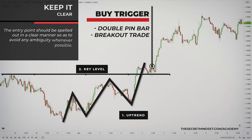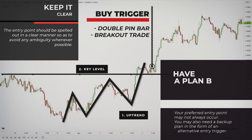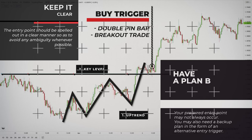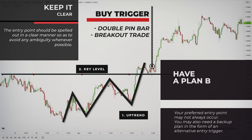Here we have a double pin bar rejection which shows bullish pressure in an uptrend at a support level. The entry point should be spelled out in a clear manner so as to avoid any ambiguity whenever possible. Your preferred entry point may not always occur, so you may need a backup plan in the form of an alternative entry trigger. This alternative entry can get you into a viable trade setup when your preferred entry point doesn't occur, so it doesn't hurt to have a plan B in mind.